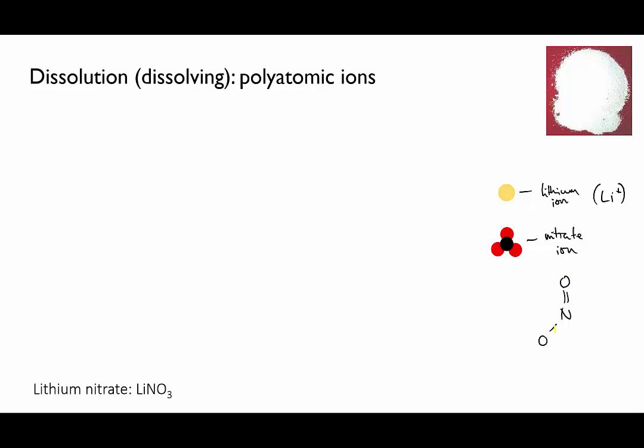If you draw the Lewis structure for a nitrate ion, you'll see that it has a nitrogen atom in the center and three oxygen atoms attached to that. So that's what this little three petaled poppy flower thing represents.